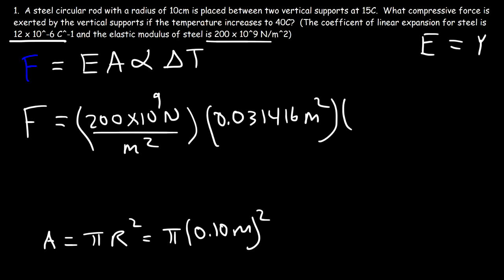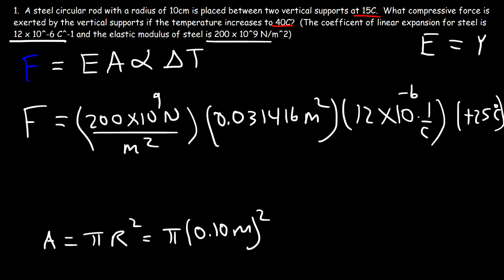Alpha, the coefficient of linear expansion for steel, is 12 times 10 to the minus 6 per Celsius. The change in temperature is the final minus the initial: 40 minus 15, which is a positive 25 degrees Celsius. Notice the units of square meters and Celsius cancel, so we get the force in newtons. It's going to be 200×10⁹ times 0.031416 times 12×10⁻⁶ times 25, giving an answer of 1.88 times 10 to the 6 newtons.